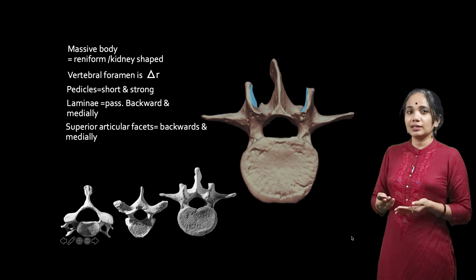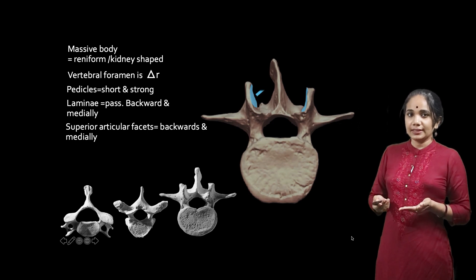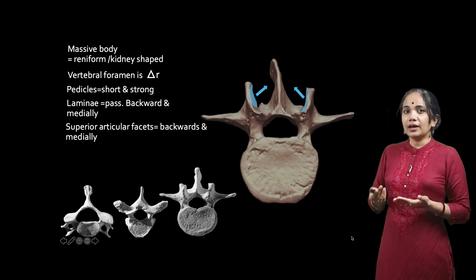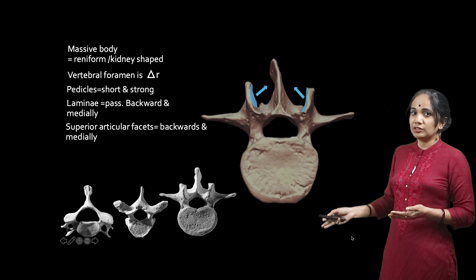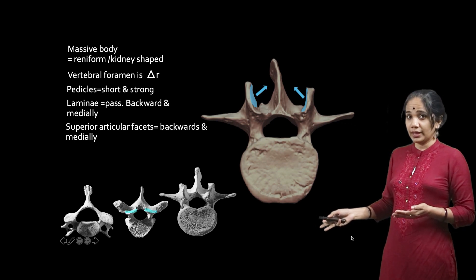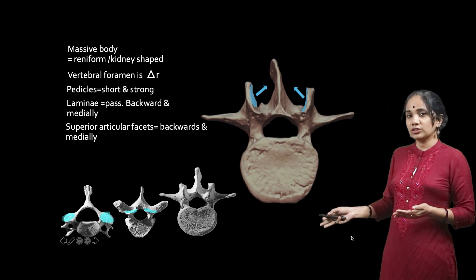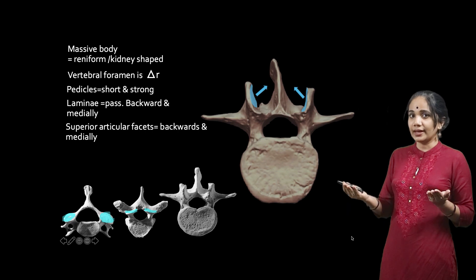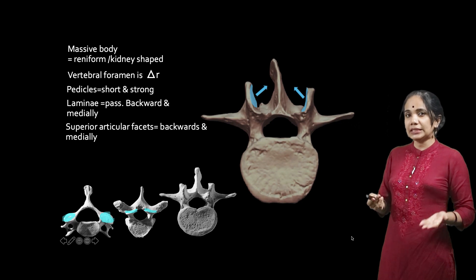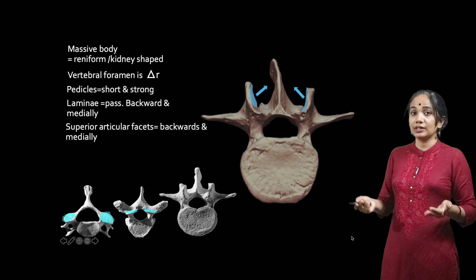The lumbar vertebra has two superior articular facets which are directed medially and backwards. Compare with the superior articular facets of the thoracic vertebra, which are directed straight backwards, and the cervical vertebra, which are slightly slanted and directed backwards and upwards. We will be seeing those vertebrae in coming videos — cervical and thoracic — and then compare all three.